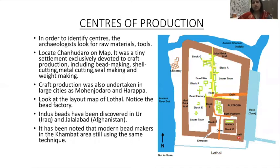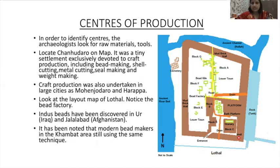How do historians identify centers of production? Archaeologists look for raw materials, tools, and leftover refuse. Chanhudaro was a tiny settlement exclusively devoted to craft production including bead making, shell cutting, metal cutting, seal making and weight making. Craft production was also undertaken in large cities like Mohenjodaro and Harappa. Looking at the map of Lothal, you can notice the bead factory and bead kiln. Indus beads have been discovered at Ur in present-day Iraq and at Jalalabad in Afghanistan. Modern bead makers in the Khambat area still use the same technique.